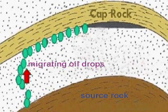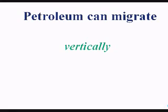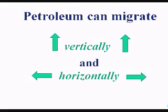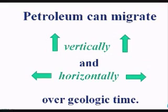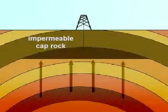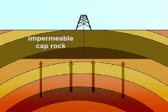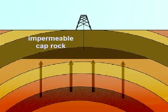Before we can economically get it out of the ground, oil can migrate up vertically over geological time. Oil will migrate upward until it is stopped or trapped by rock that is hard. This hard or impermeable rock will not allow the oil to migrate upwards further.